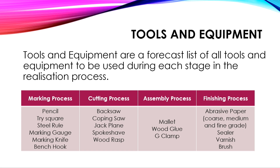For the cutting process we can use back saw, coping saw, jack plane, spokeshave, and wood rasp. For the assembly process we can use mallet, wood glue, and G-clamp. And finally, for the finishing process we can use abrasive paper — it can be coarse, medium or fine grade — sealer, varnish and brush.